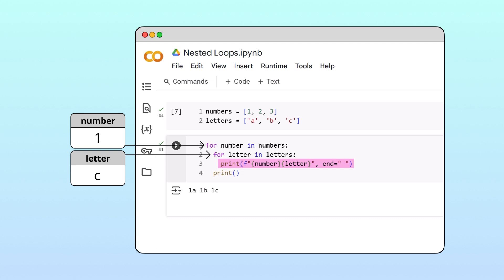After the third iteration, Python returns to the inner loop header. Since there are no more letters in the letters list, Python moves to the final print statement in the outer loop. At this point, Python has completed one iteration of the outer loop and three iterations of the inner loop.